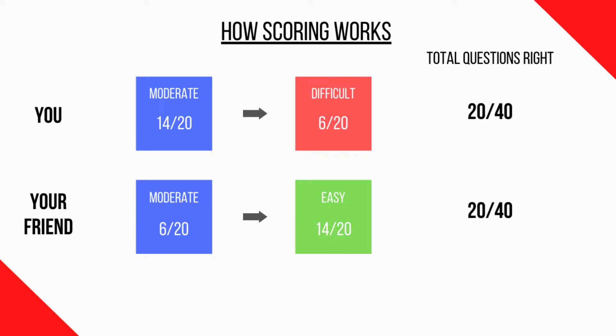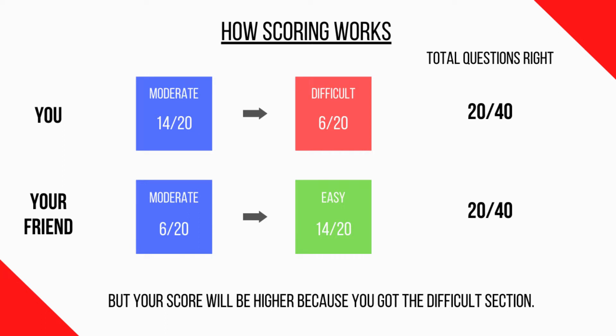So out of the total 40 quant questions, both of you scored 20 out of 40. However, your score is going to be higher than your friend's score. Why? Because you got the difficult section and answered many of those hard questions correctly. Your friend struggled with the moderate section and only recovered on the easy section. This shows you are better at math, so you're awarded the higher quant score.